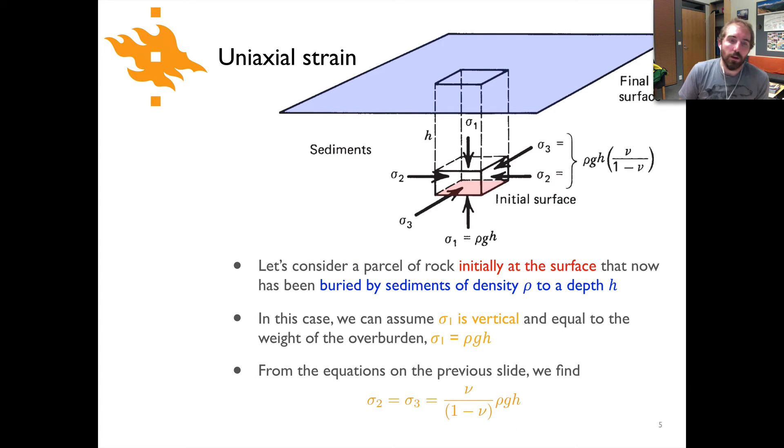The example we're going to consider here is rock that was initially at the surface, so that's what's highlighted in this sort of pinkish color here. That was the surface of the earth prior to deposition of some thickness of sediment so that you have the final surface blue here indicating that that's the top of the surface of the earth after sediment has been deposited. In this case we're going to assume that sigma one is vertical and sigma one is going to basically just be equal to the weight of the overburden. So as we've seen already a few times, sigma one is simply going to be rho times g times h where h is the thickness of the pile of sediment that has been deposited. From the equations on the previous slide for this particular scenario we would find that sigma two equals sigma three equals nu over one minus nu times rho gh. Just plugging that in for sigma one.